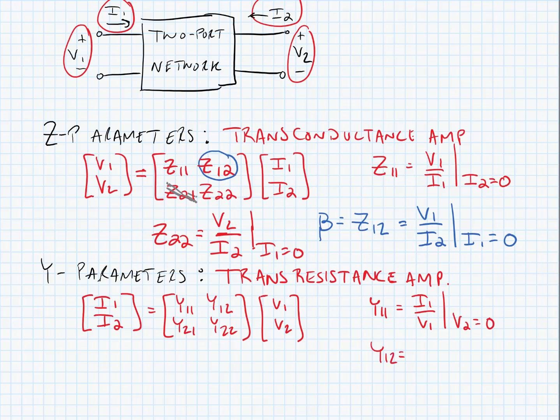Y12 would be equal to beta, and this is equal to I1 over V2 when V1 is equal to 0. How do we make V1 or V2 equal to 0? We know that the voltage at port 1 or port 2 would be equal to 0 if they were short-circuited. So to make V1 equal to 0, we would short-circuit port 1; to make V2 equal to 0, we would short-circuit port 2.